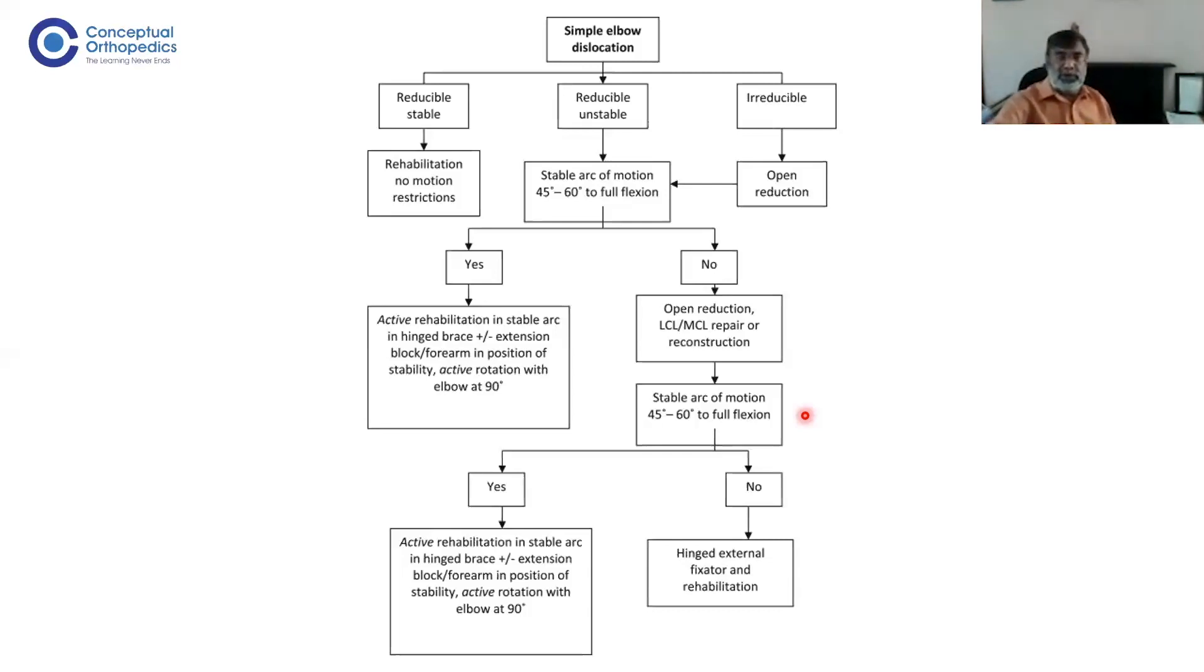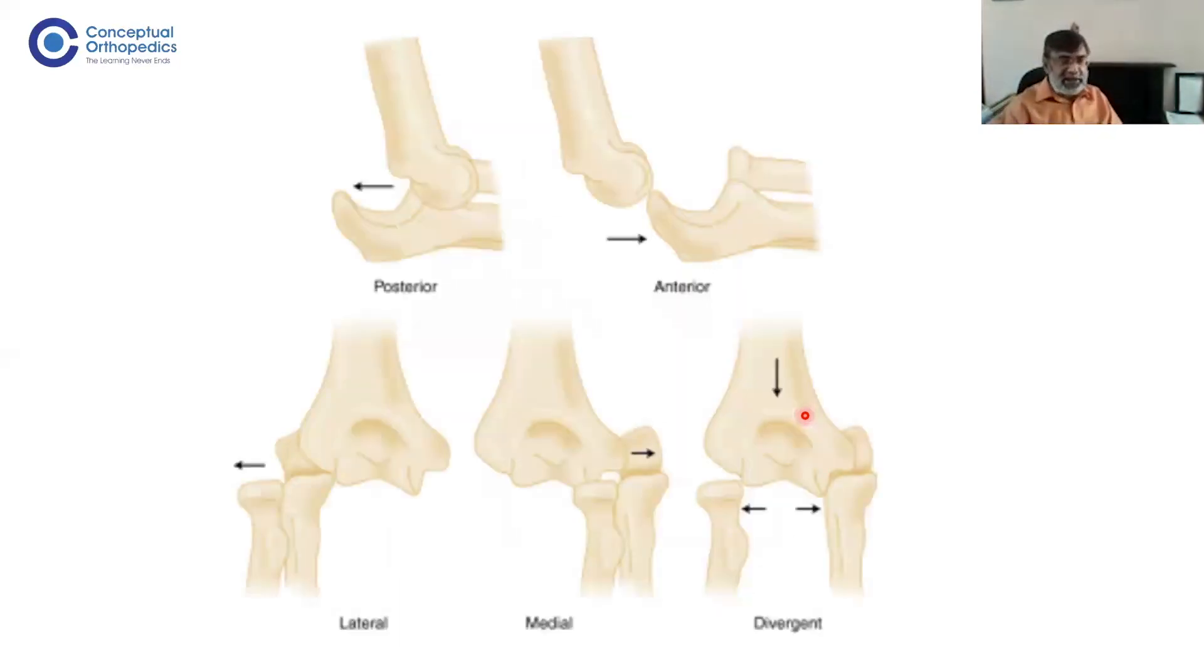Are there any other elbow dislocations besides posterolateral? Most of the time you'll see either direct posterior or posterolateral dislocation. You'll hardly see these other types in textbooks—they're probably a few case reports. Anterior dislocation is very rare, divergent is hardly seen. You occasionally see medial or lateral, but posterolateral is the commonest.